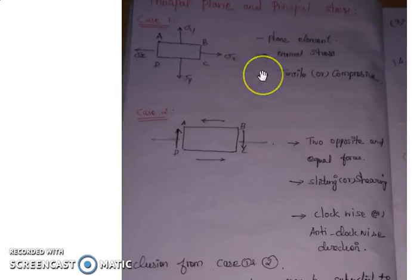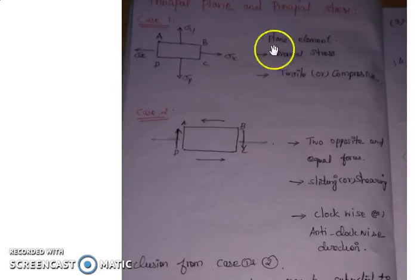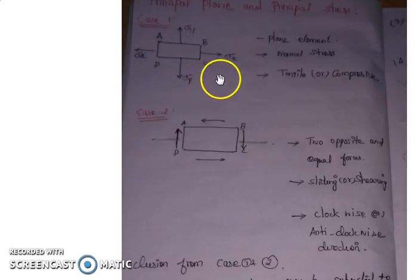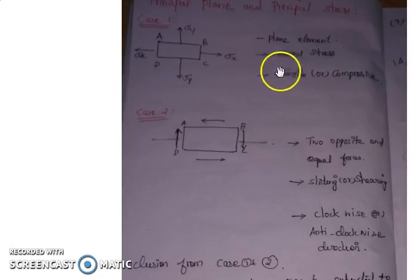Consider this plane element ABCD. A plane element has negligible thickness. This plane element ABCD is subjected to stresses in both x and y directions. The stress may be tensile or compressive, and these are called normal stresses.